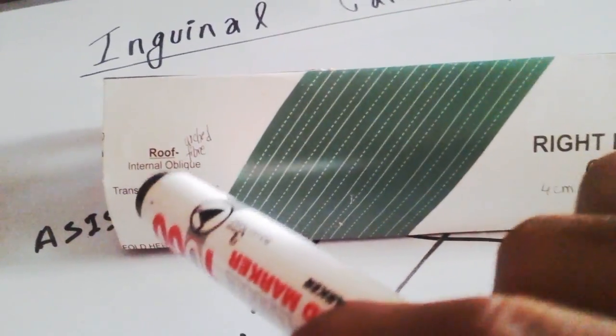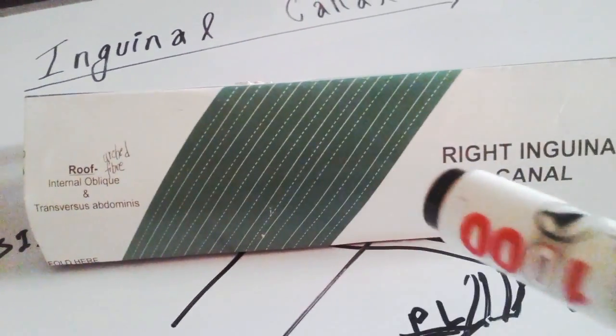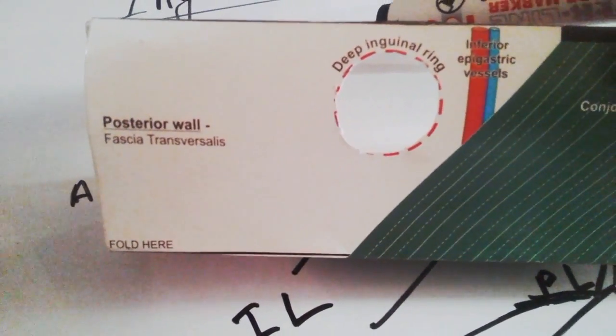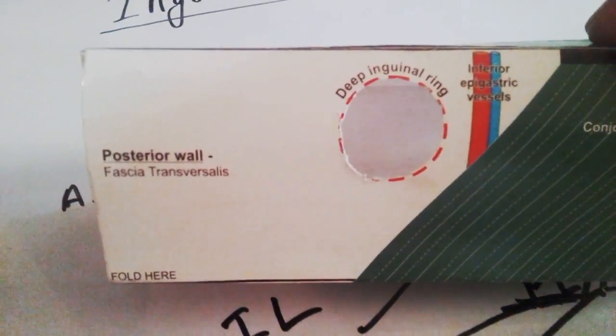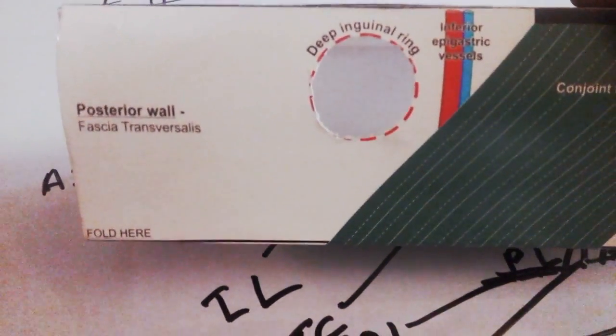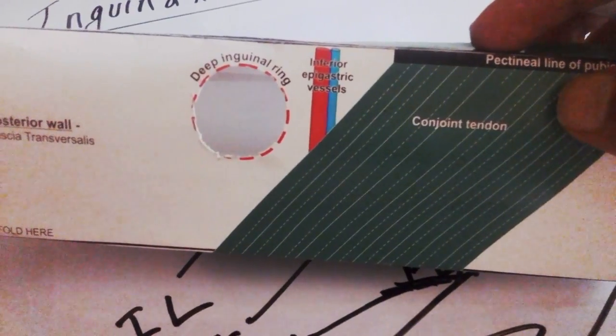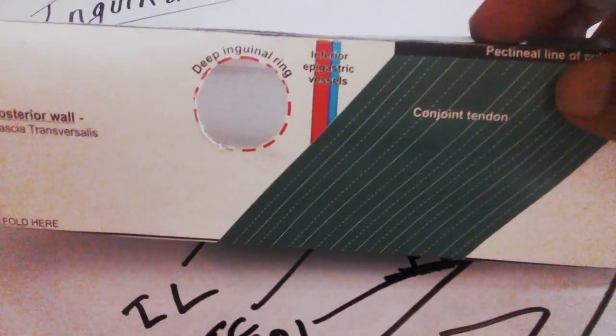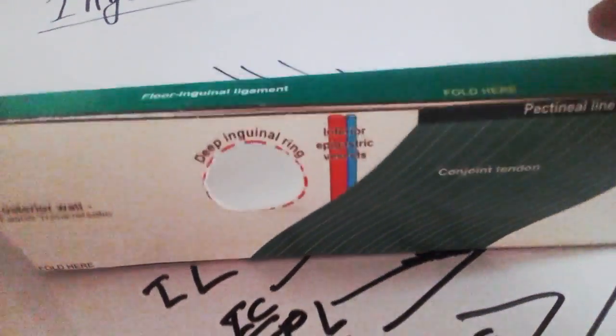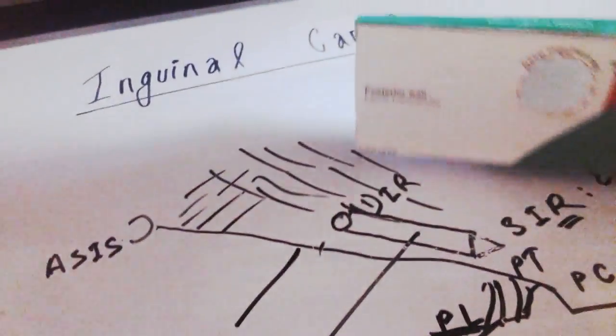The roof is formed by the arched fibers of the internal oblique muscle and the transversus abdominis muscle. The posterior wall contains the opening of the deep inguinal ring on the fascia transversalis. It is formed laterally by the fascia transversalis, extraperitoneal fat, and peritoneum, and medially by the conjoint tendon and the reflected part of the inguinal ligament. Just medial to the deep inguinal ring are the inferior epigastric vessels.